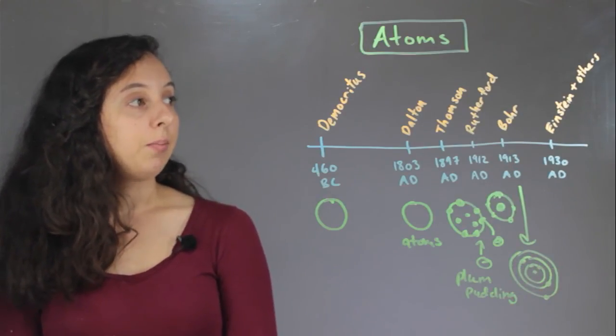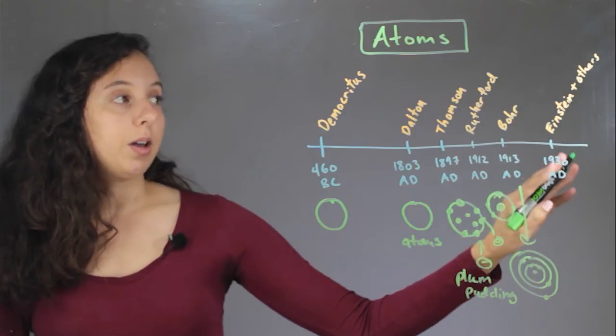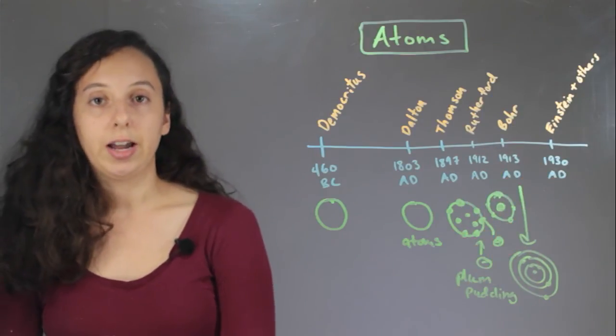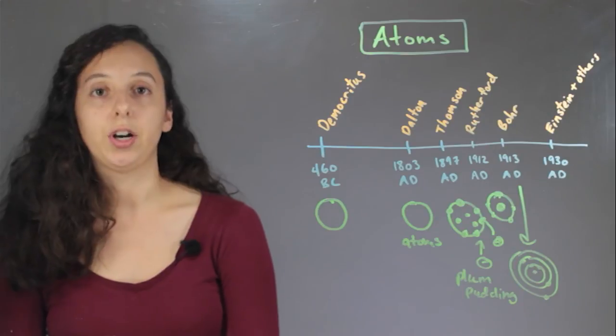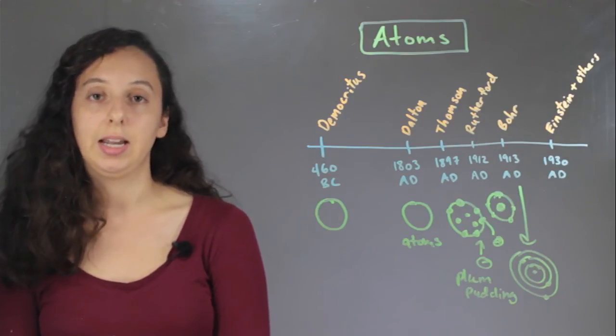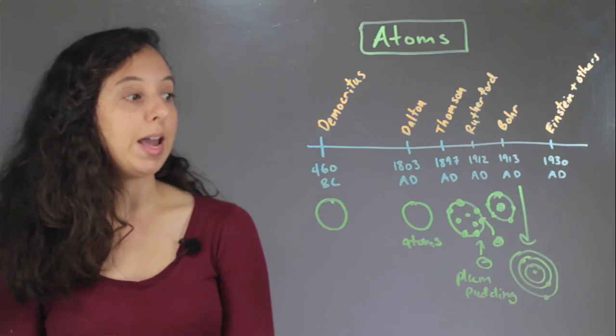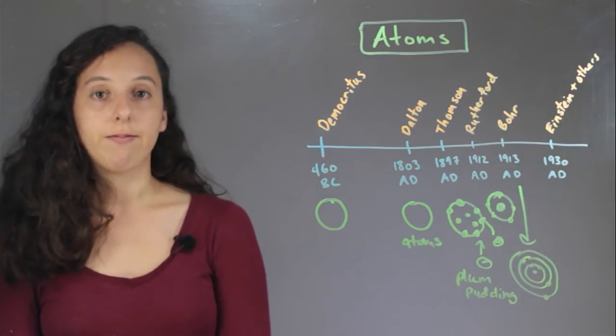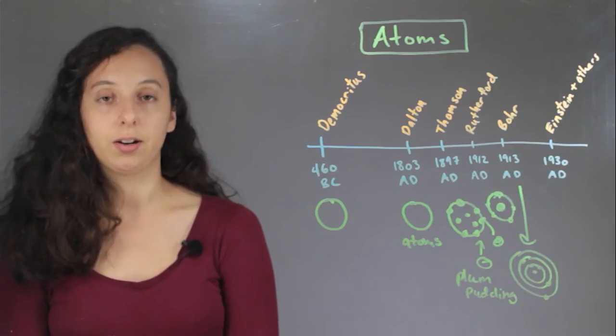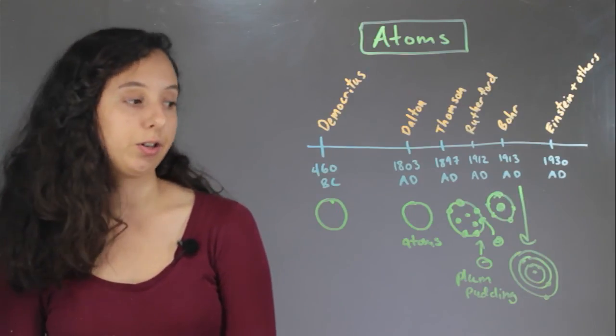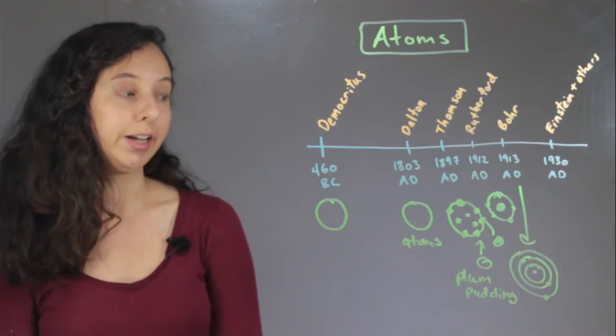And then after him, Einstein and a bunch of other very smart scientists went even farther and started discovering quantum mechanics and realizing that an electron could act as a particle and as a wave and figuring out a very intense theoretical math and saying that electrons are actually even more interesting than that.